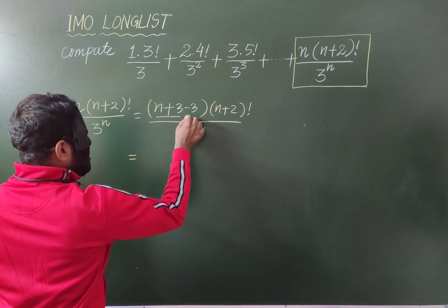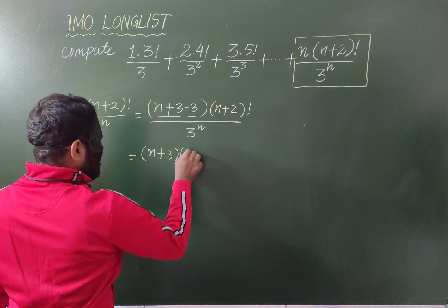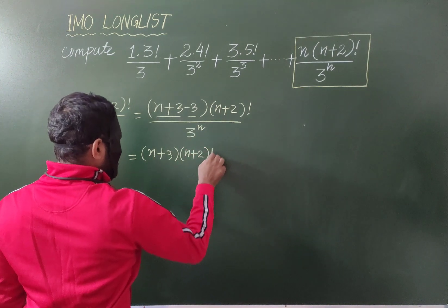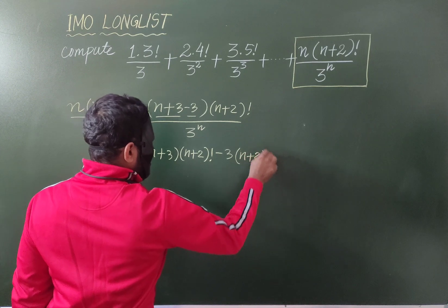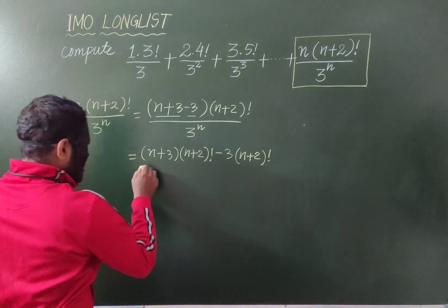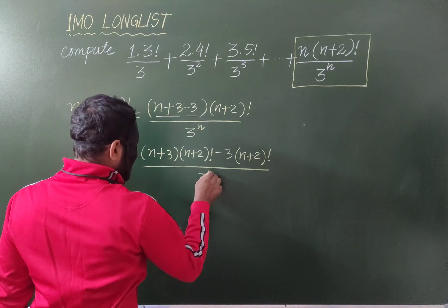And then, taking this one quantity and this is another quantity, I can simplify like this. Write 3 to the power n.